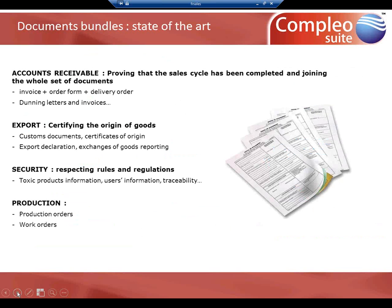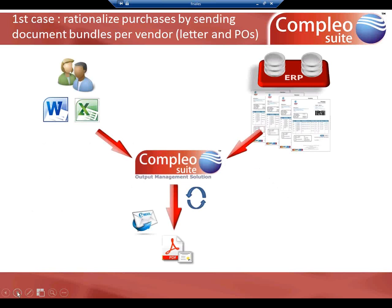The last point was on the production side. Production orders can come from the ERP and can also be linked to work orders, so the fact that you can create a bundle with both those documents can improve the productivity of your company. Let me show you three different cases — the architecture of different cases — and then we'll start the demo.